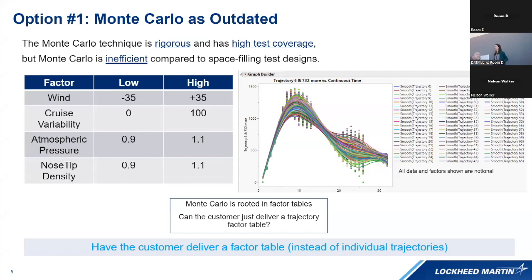The first assertion option number one makes is that the customer should provide a factor table as opposed to a list of trajectories, which picks up the motif of changing or guiding customer habits. Is it simpler to back-calculate the factor table from the trajectory list, or can we work with our customers better, socialize statistics and design of experiment concepts, and slowly ingrain those behaviors into our customer relations? The second assertion is that the Monte Carlo technique is rigorous and has high test coverage, but it's inefficient — so where applicable, skipping it is preferred.